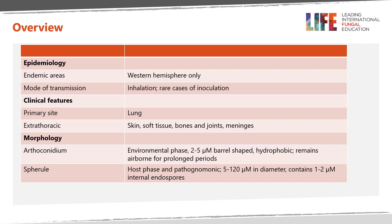The arthroconidium is the environmental phase of the fungus. It is a 2 by 5 micron barrel-shaped spore that can remain airborne for prolonged periods. In the host, the fungus morphologically changes to a spherule, which can be from 5 to 120 micrometers and contains small endospores.